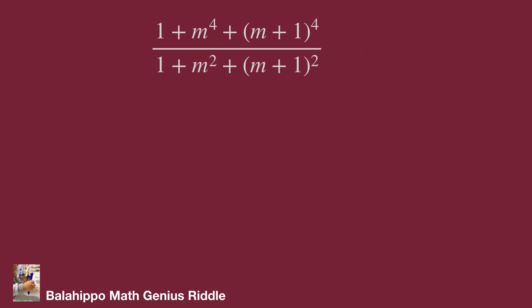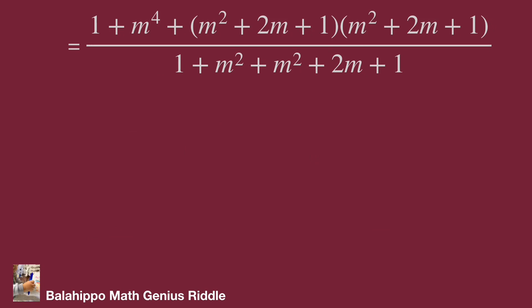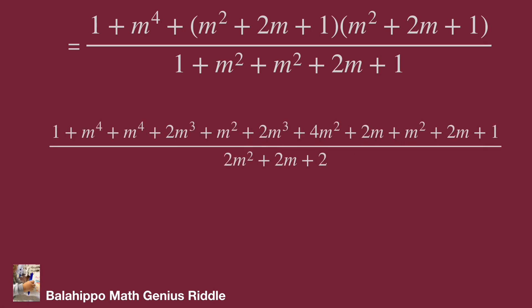In the numerator, (m+1) to the power 4 equals (m+1) squared multiplied by (m+1) squared. Then (m+1) squared equals m squared plus 2m plus 1. Continuing to expand, we get the expressions shown on screen. Therefore, the numerator becomes 1 plus m to the power 4 plus 1 plus 2m cubed plus m squared plus 2m cubed plus 4m squared plus 2m squared plus 2m plus 1.